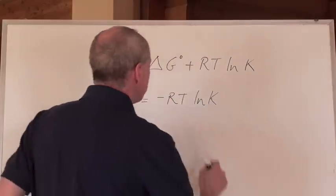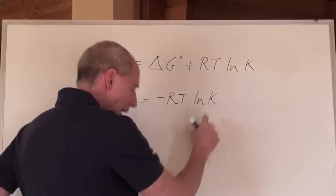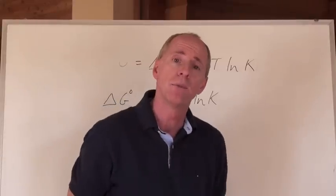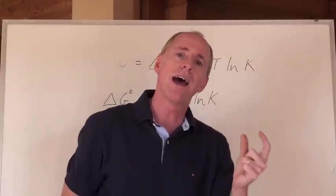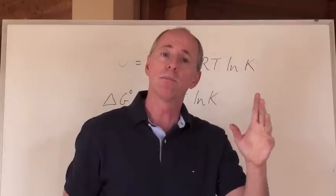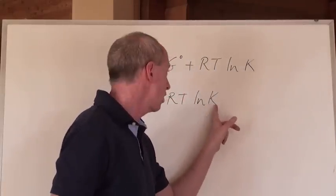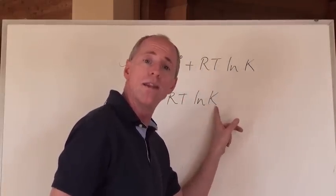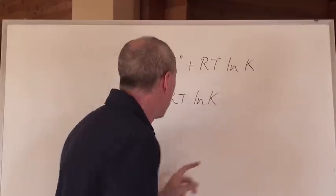Think about this, too. If you take the natural log of K, and K happens to be a number greater than one, that number is going to have a logarithm that's greater than zero, so it's going to be positive. The natural log of K is a positive number when that value is greater than one.